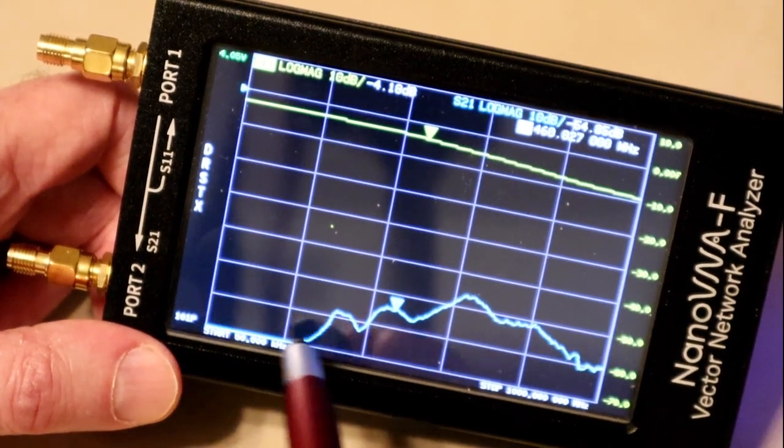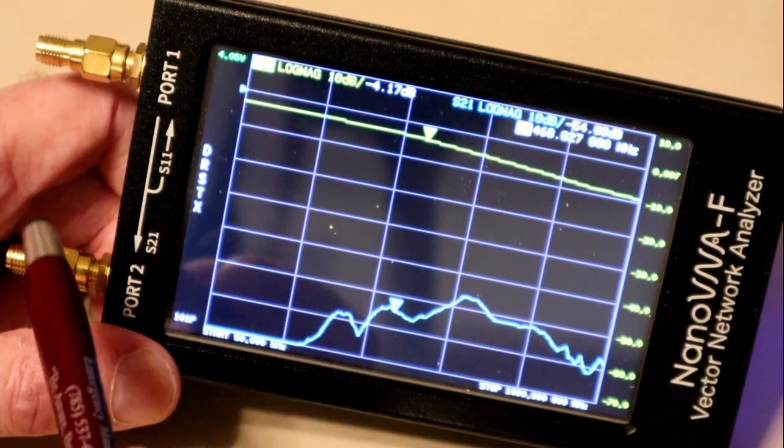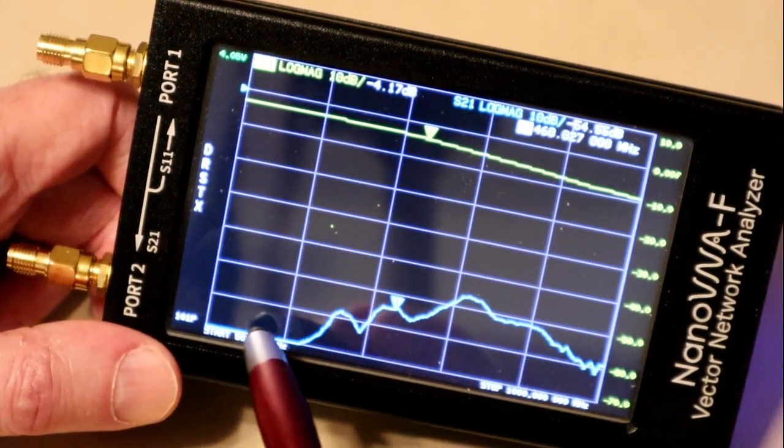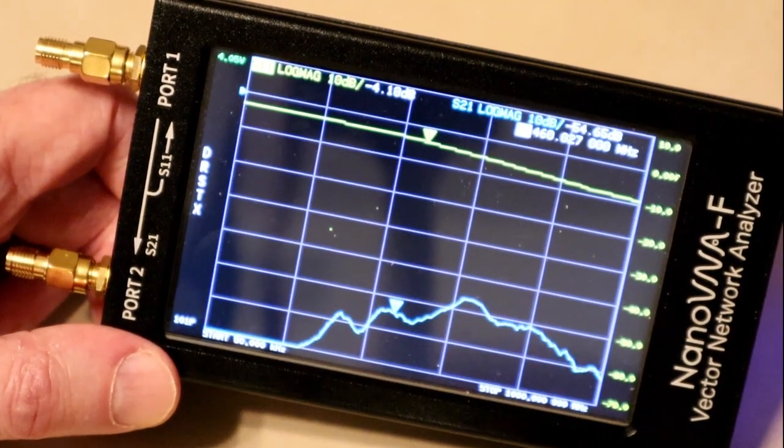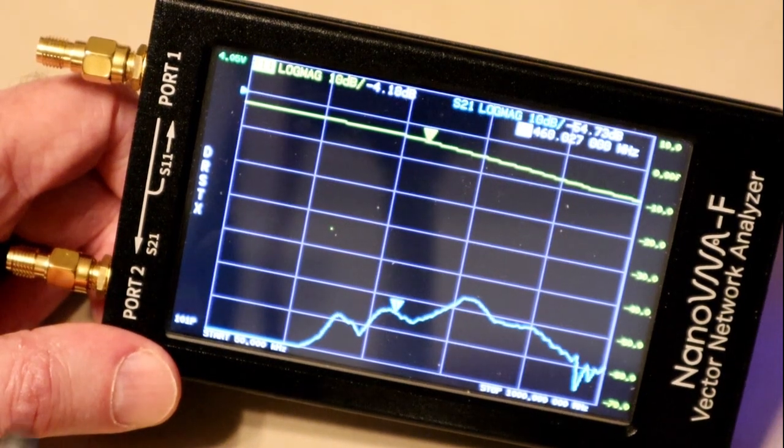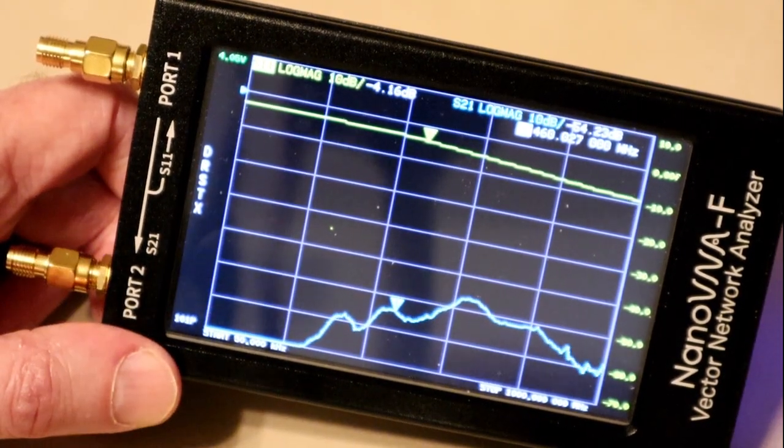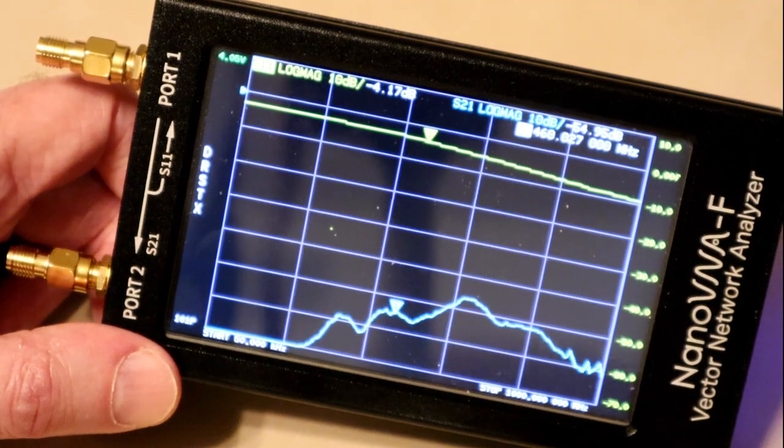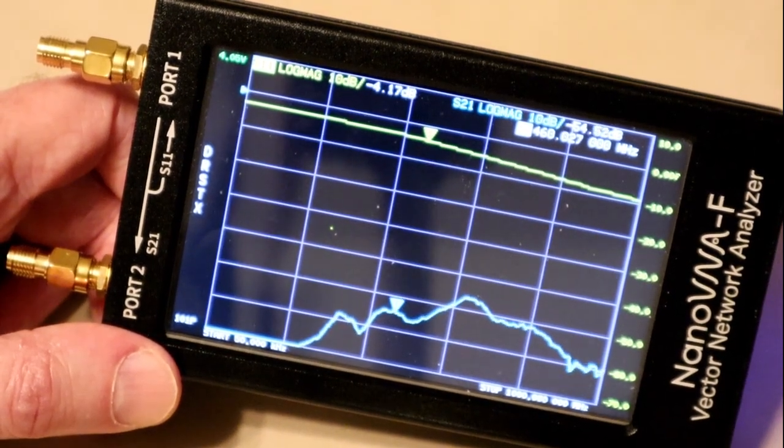S21 should be very low down here because port 1 is not connected to port 2, but it actually jumps up, and that's due to limited isolation inside the instrument from port 1 to port 2. And that can be corrected for, to a certain extent, if you have the right test setup.